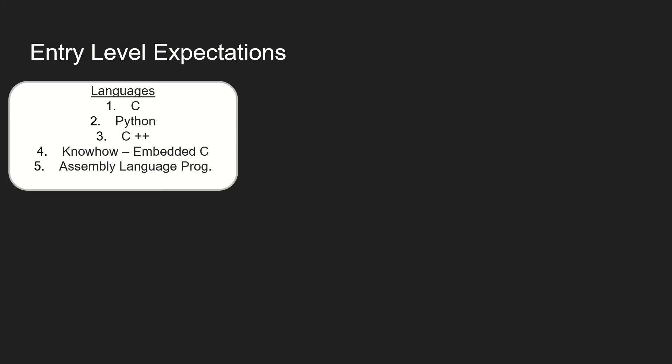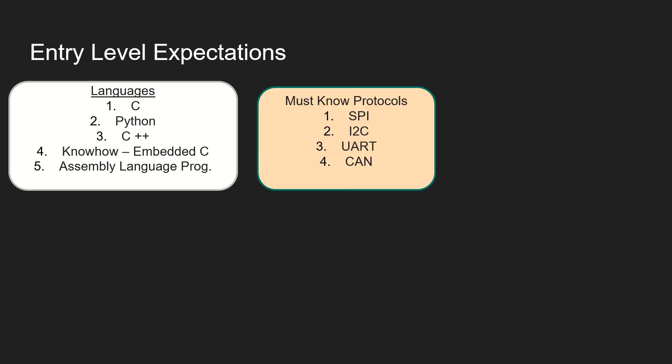What are the expectations at an entry level? If you're a fresher, languages like C, Python, C++ — at least one of these three you should be very strong in, and interviewers will expect you to be really good at that. If you know embedded C programming, that's going to be very helpful. You are also expected to know assembly language programming, which you must have studied in your engineering or UG courses. Make sure you keep in touch with that because it's still in the market and very useful for device driver development.